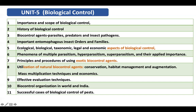The fifth topic covers the ecological, biological, taxonomical, legal, and economic aspects of biological control. You need to know the ecological impact on the environment and host, the biological aspects like egg-laying and generations per year, taxonomic identification characteristics, legal bylaws and rules when importing biocontrol agents from other countries, and economic aspects like cost-benefit ratio.